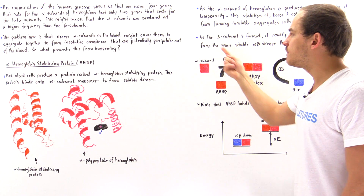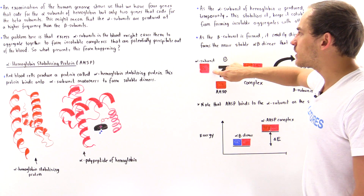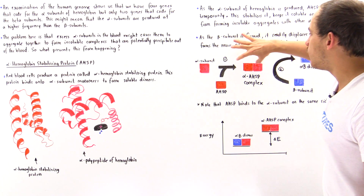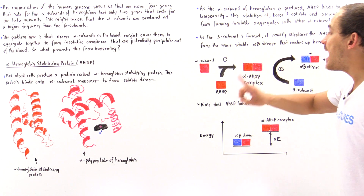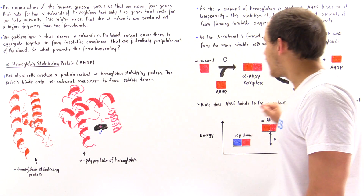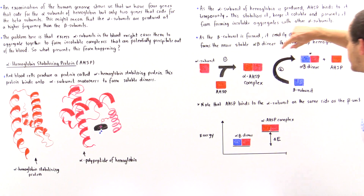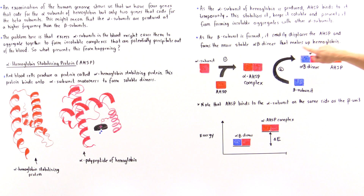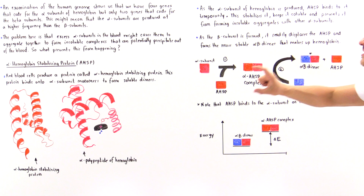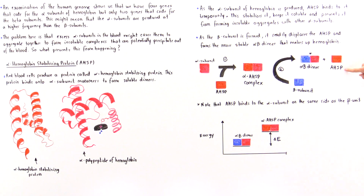Initially, we have an excess amount of alpha subunits, so to prevent their aggregation, our cells use the alpha hemoglobin stabilizing protein to form the alpha-AHSP complex, which is stable and soluble in the blood plasma. When the beta subunits are produced by the red blood cells, they begin displacing the AHSP and forming the alpha-beta dimer, which is more stable. This drives the equilibrium towards the alpha-beta dimer, and notice that the beta unit binds onto the alpha unit on the same face as the AHSP molecule.